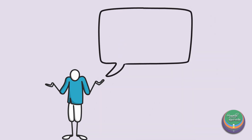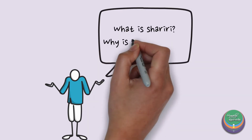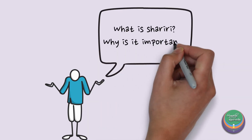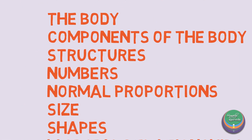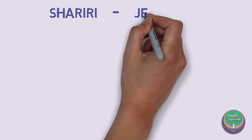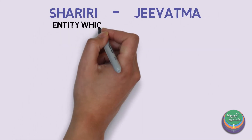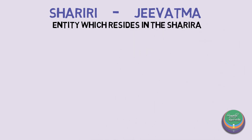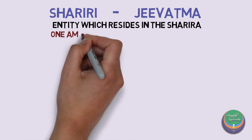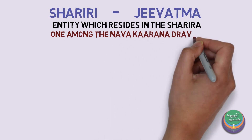As we are explaining about Sharira in this video, it is important from the perspective of Ayurveda that we learn in brief about Shariri too. Shariri is a Sanskrit word referring to the entity which resides in the Sharira. Shariri is commonly represented by the term Atma and is one among the Navakarana Dravyas.